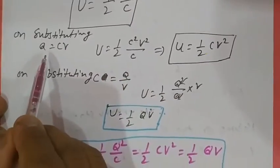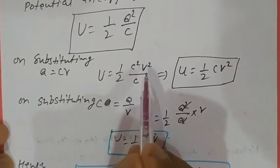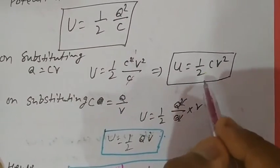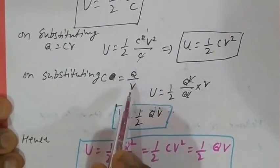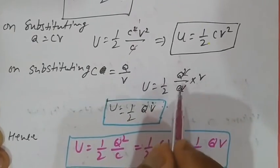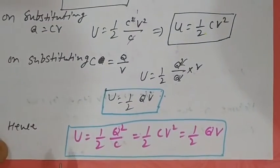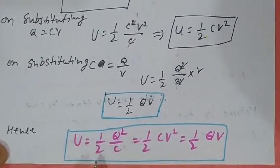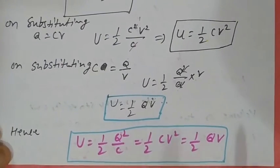On substituting Q = CV, we get U = (1/2) × C²V² / C, so one C cancels giving U = (1/2)CV². On substituting C = Q/V into the original relation, U = (1/2) × Q² / (Q/V), and Q cancels giving U = (1/2)QV. Hence we have three expressions: U = Q²/2C = (1/2)CV² = (1/2)QV.